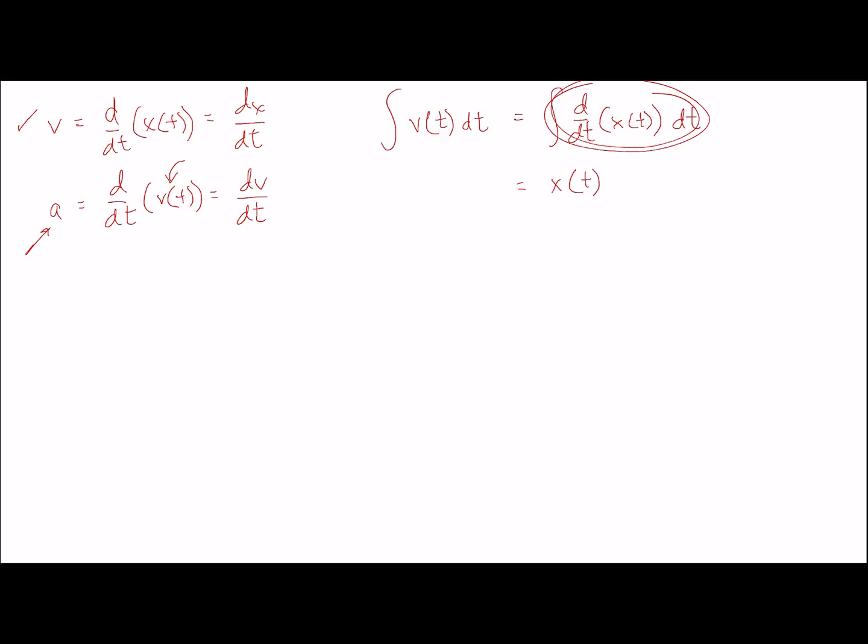and so by integrating over a derivative, we just get back x as a function of time. And on the other side, well, this is more interesting because that tells us that if we know a function for velocity, then we can integrate it with respect to time to get the position of the object.